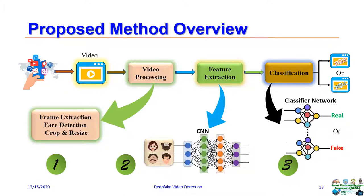This is the proposed method. It has three parts: video processing, feature extraction, and classification. Video processing consists of frame extraction, face detection and cropping, and resizing. Feature extraction is done by a convolutional neural network.